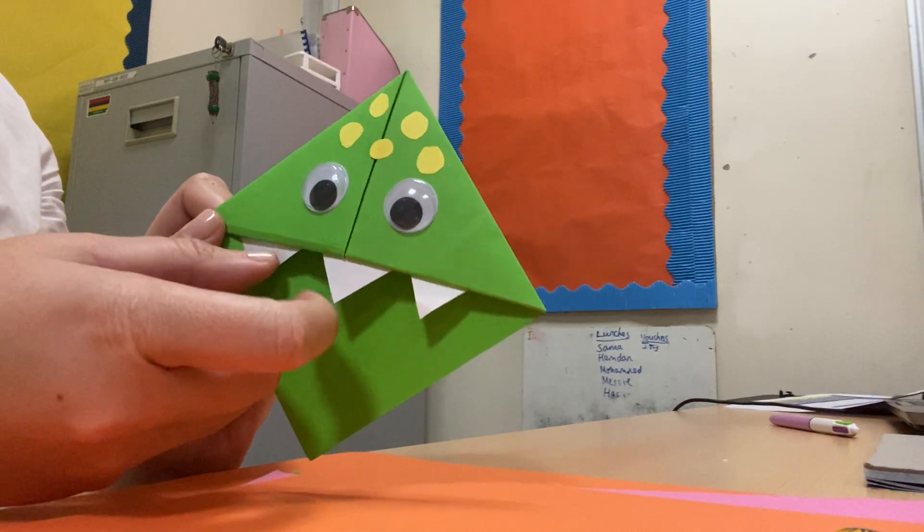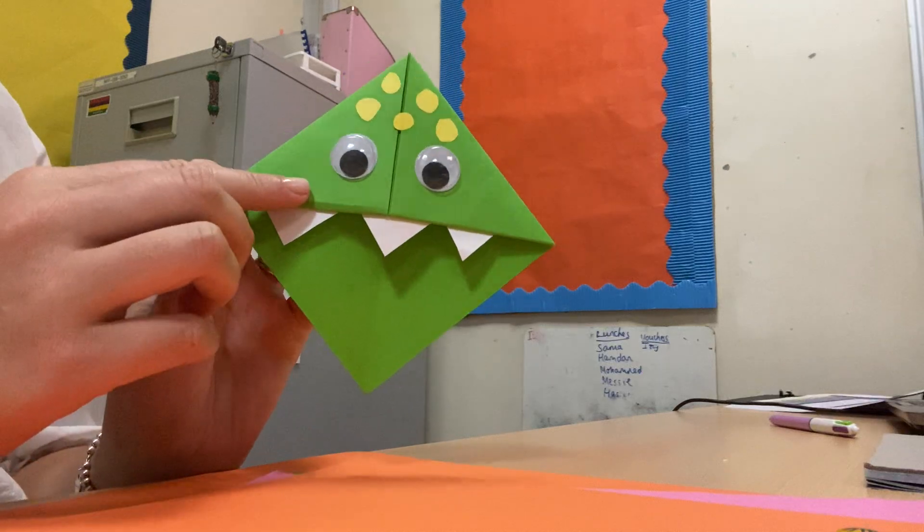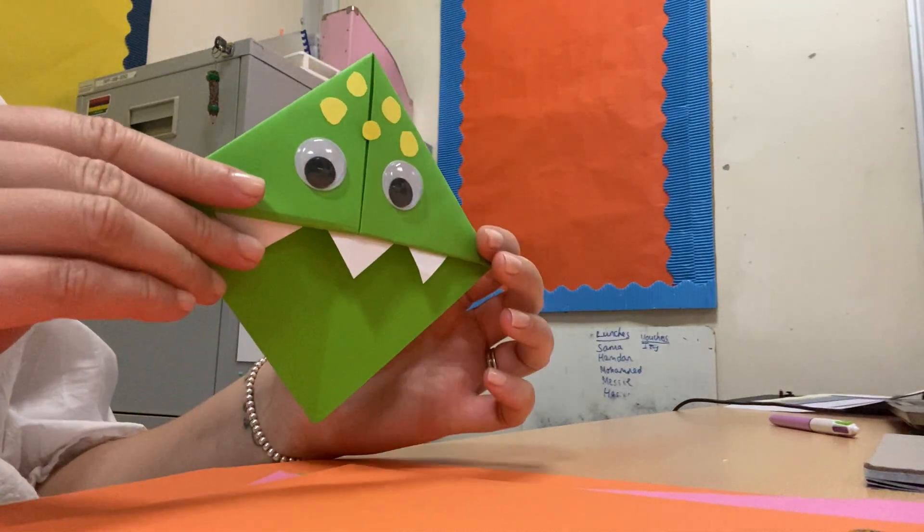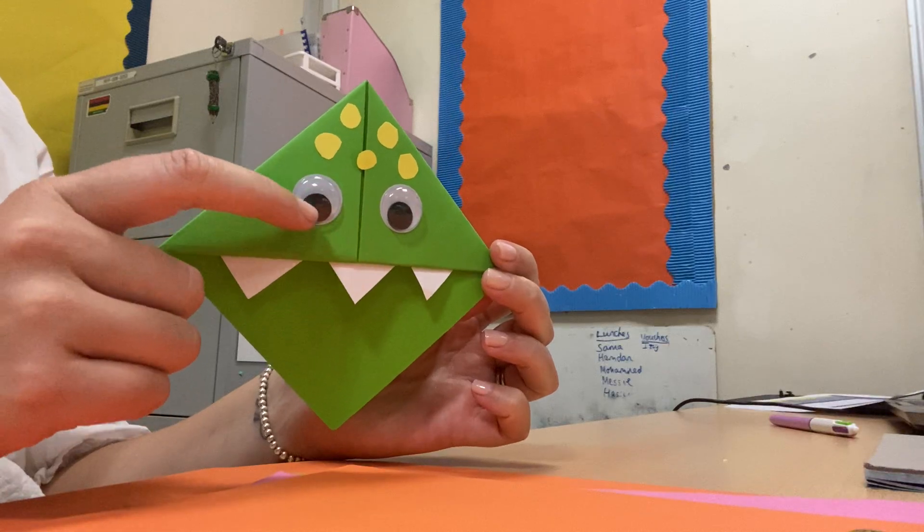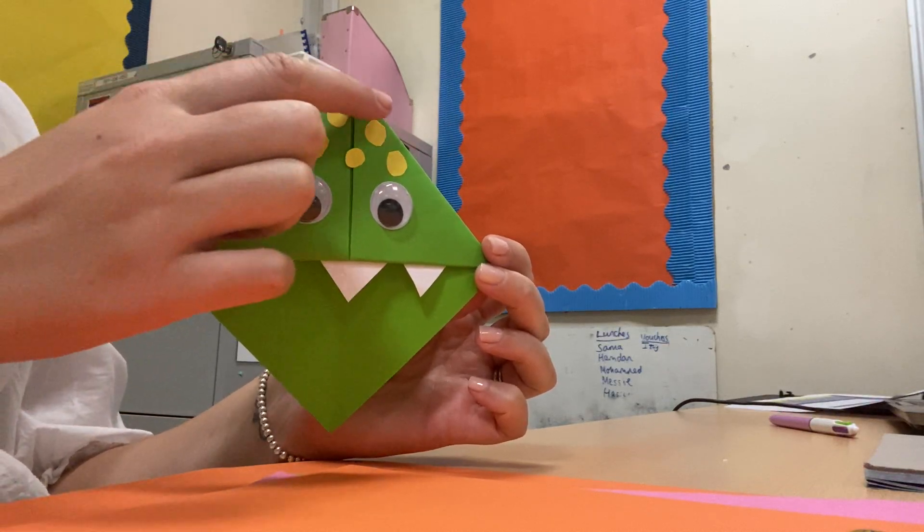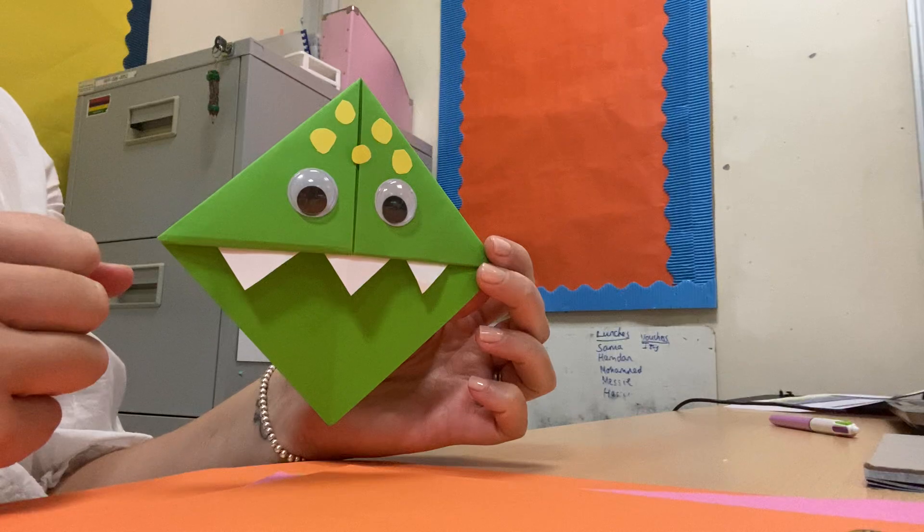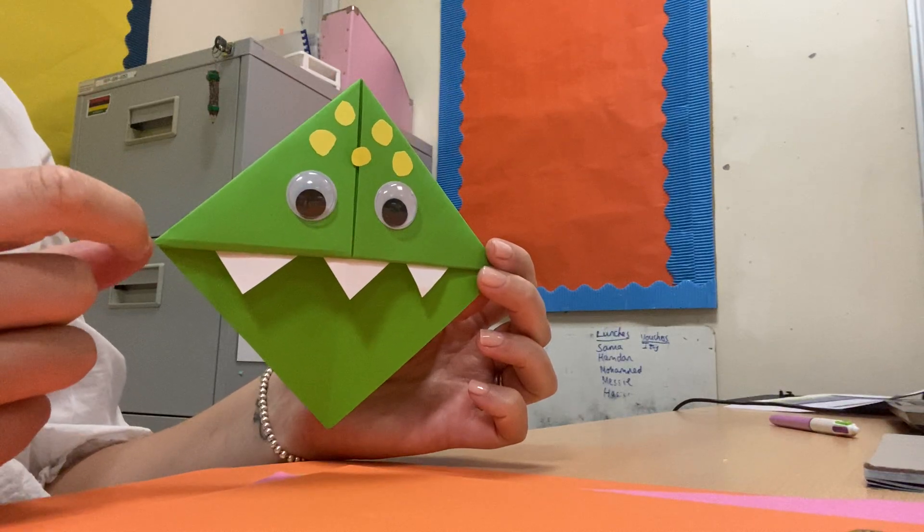So you will need some different coloured paper. You can do it on white paper but they look better in coloured paper. Maybe some googly eyes if you have some or we can draw them on if not, and some other different coloured paper. You also need some scissors and a ruler.